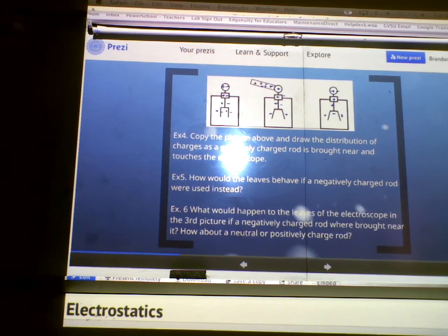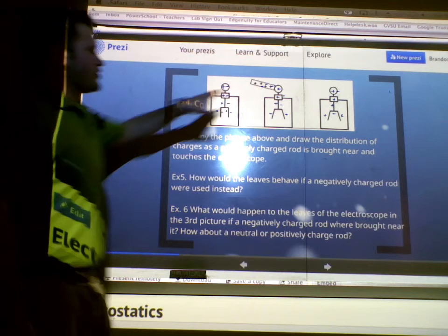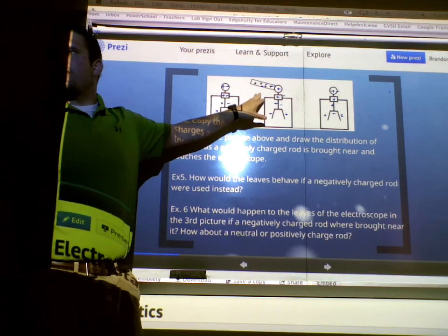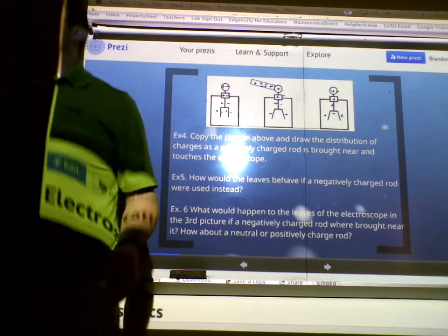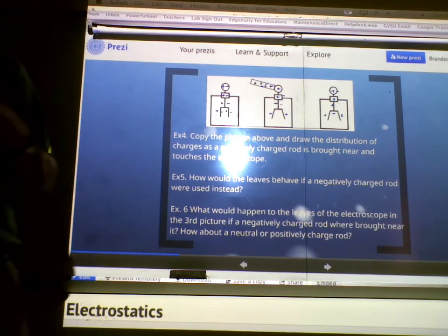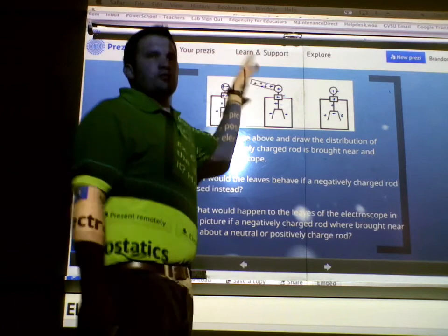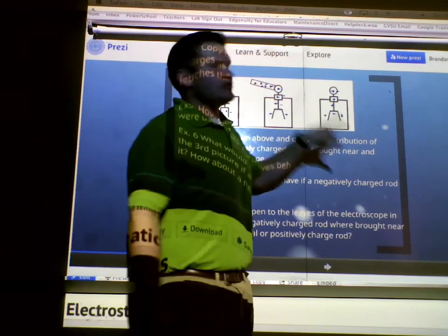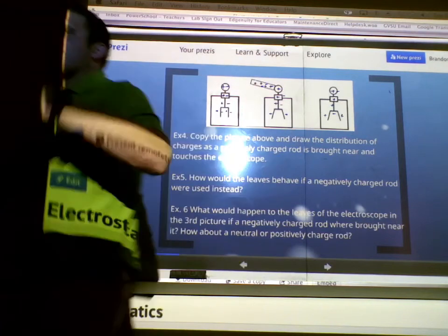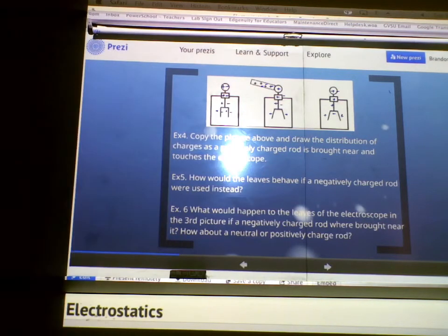Okay. Second one. How would the leaves behave if a negatively charged rod were used instead? So, instead of using this positive rod here, I used the negative rod. Right? Would we lose negatives in that case, or gain negatives? We'd gain negatives. So, instead of losing 3 negatives, we might gain 3 or 4 negatives, and then those negative charges would evenly distribute and still have the same result. The leaves would still be pressed out.